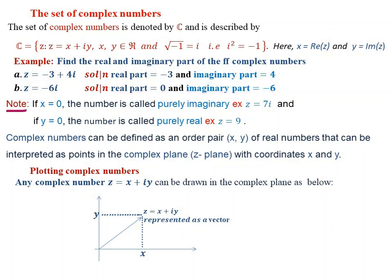Note: If x is equal to zero, then the complex number is called purely imaginary.